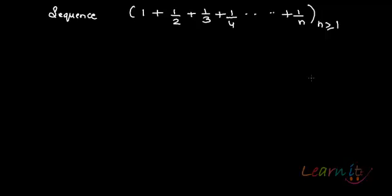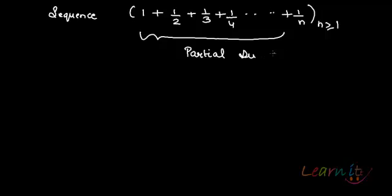Let us look at this very interesting sequence. The sequence is 1 + 1/2 + 1/3 and so on, summing up to 1/n, where n is greater than or equal to 1. This whole thing is one term in the sequence — it is essentially a partial sum. We need to see whether this sequence of partial sums converges or not. It is essentially a series, and this one is a harmonic series. Let us check whether it is convergent or not.